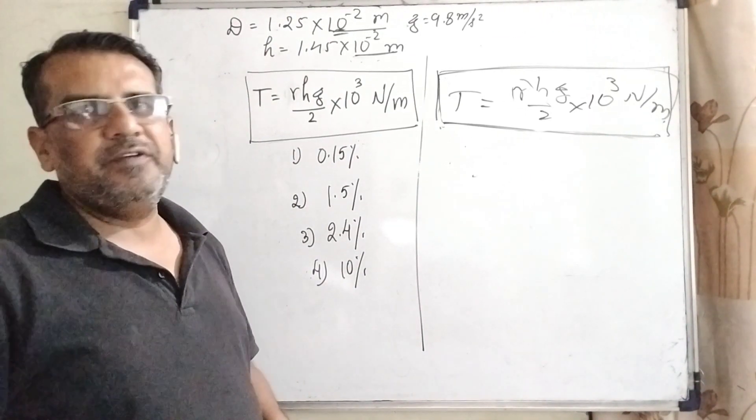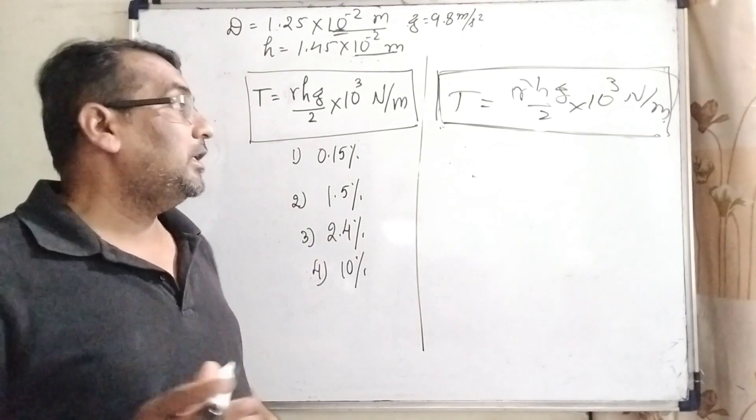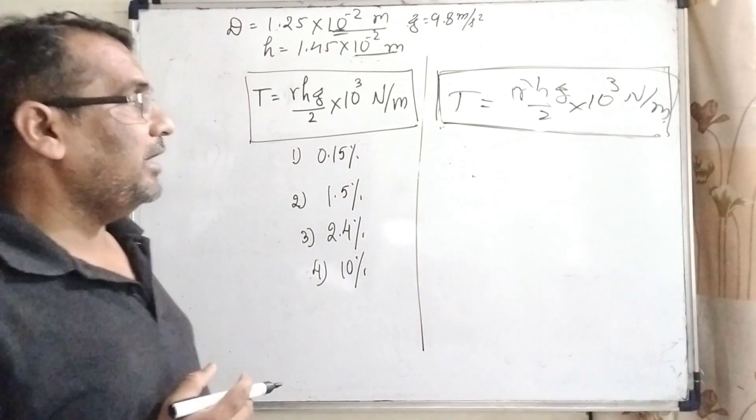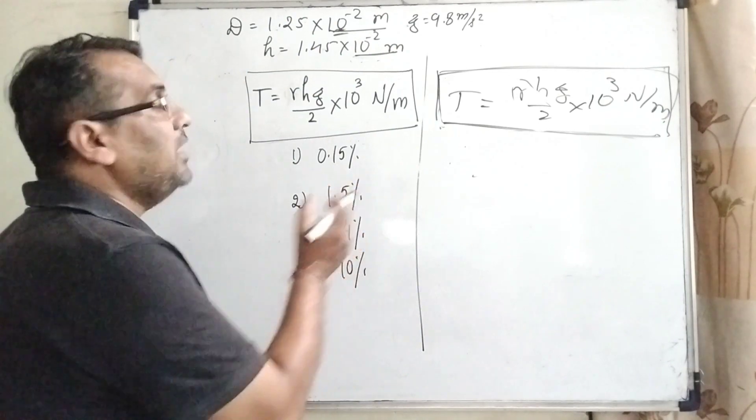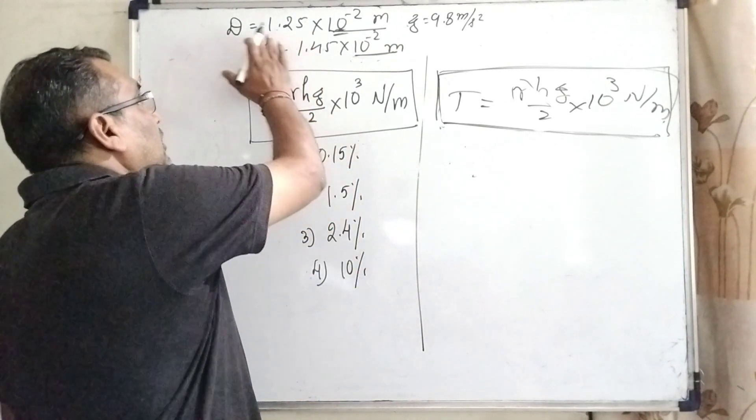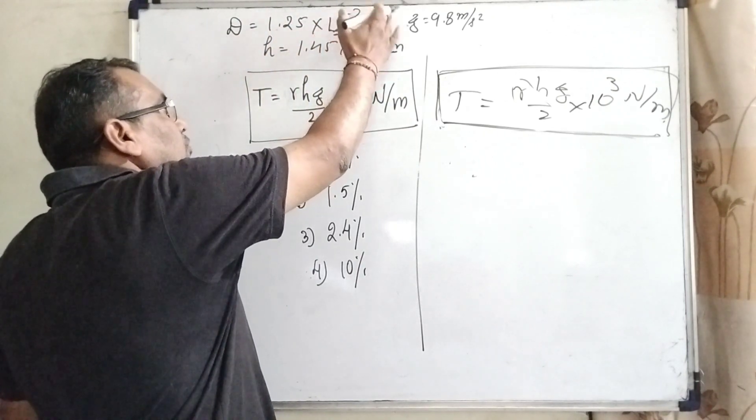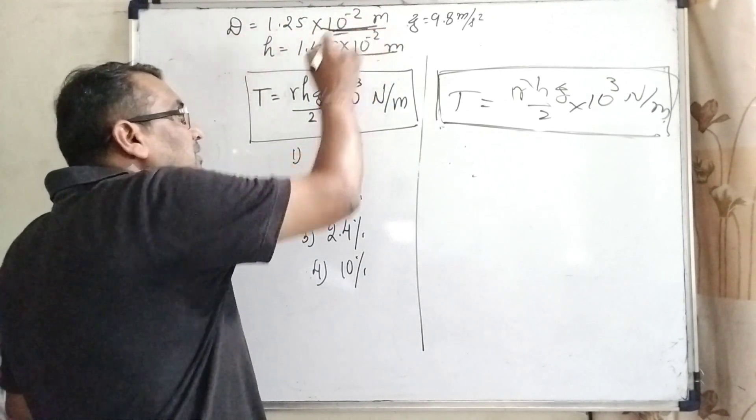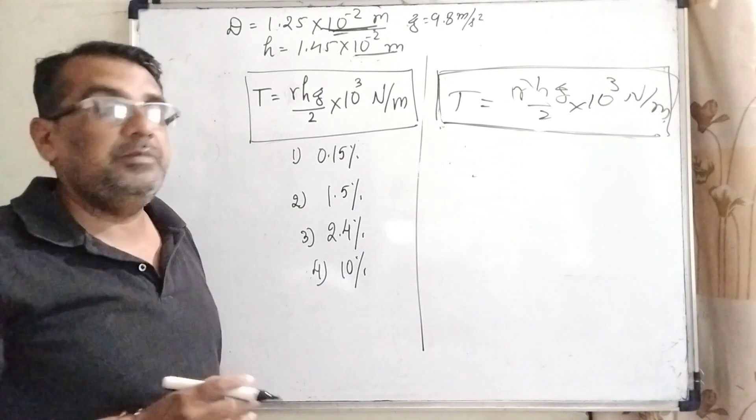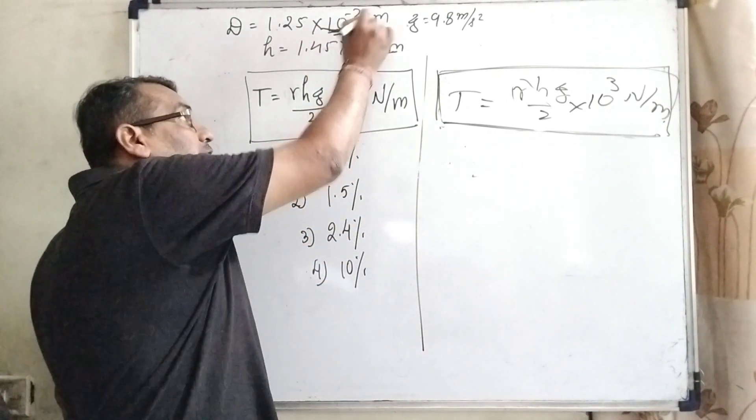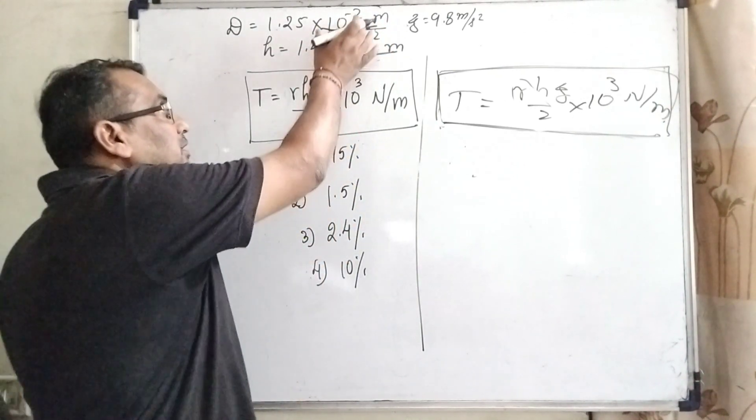This question is very simple but conceptual. And what is the concept behind it? Where is the error given? You can see that diameter of the capillary is given 1.25 into 10 raised to power minus 2 meter. 10 raised to power minus 2 means it is the least count, means it is the minimum value we can measure. So here is the error.